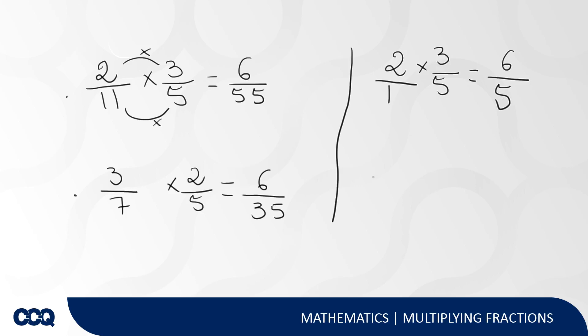The last example is gonna be 3 times 7 over 8. For this one, since the first number is a whole number, we're just gonna put it over 1 again and then we will do 3 times 7, which is 21 over 8.